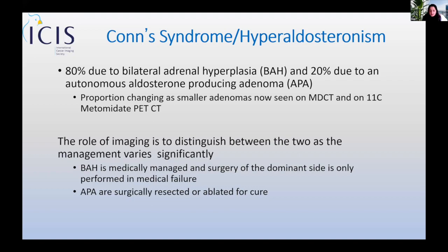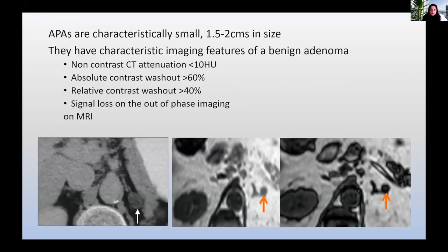An APA is exactly the opposite — the first treatment strategy is surgical, and the vast majority of these patients are then cured of their hypertension. APAs are difficult because characteristically they are very small lesions, often less than 1.5 to 2 centimetres, and very difficult to find when sub-centimetre. They have all the characteristic features of a benign adenoma.